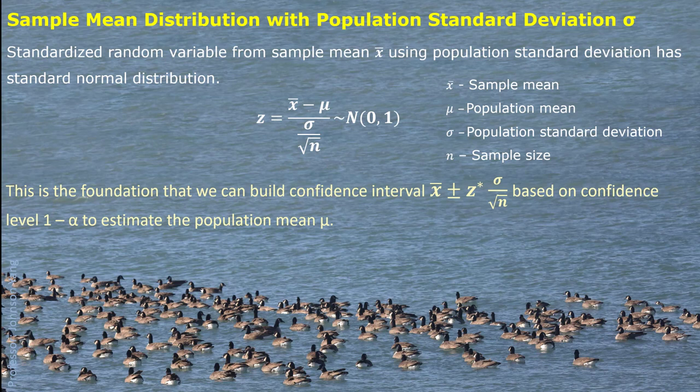This confidence interval is built up under the 1 minus alpha confidence level. With this confidence level, we can easily figure out the z critical value, labeled as z-star, which can be found from an Excel function in a very convenient way.